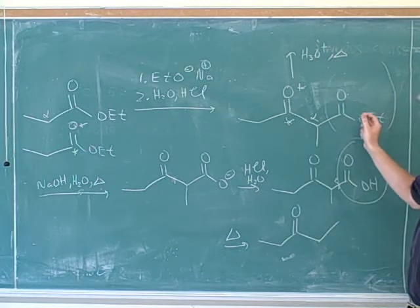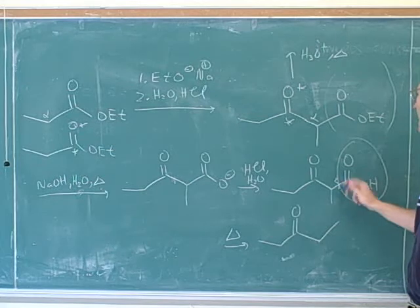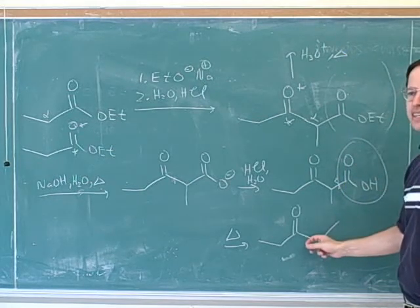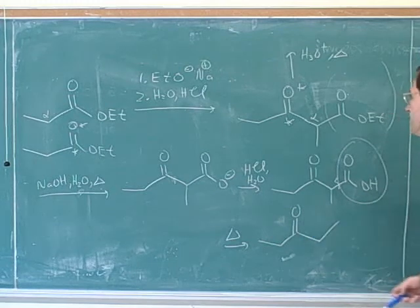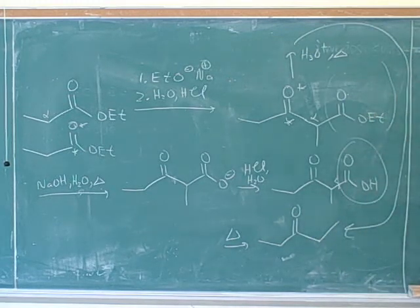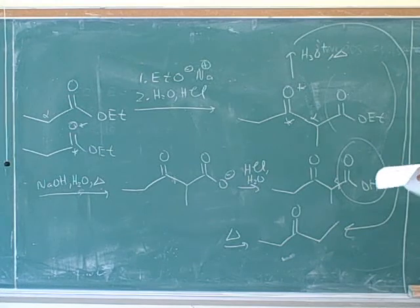If you just added H3O plus and heat to this, do you see how that would take us straight to this picture? Because it would hydrolyze this bond, and it would give us the protonated form, and the heat will then take us to here. Okay, so that would be an alternative way that to me seems simpler, even though that's not what your instructor did. So how could we put all this together to make a ketone?